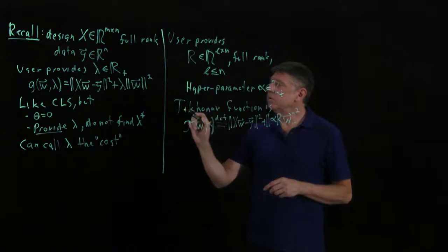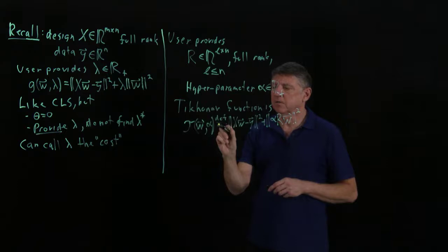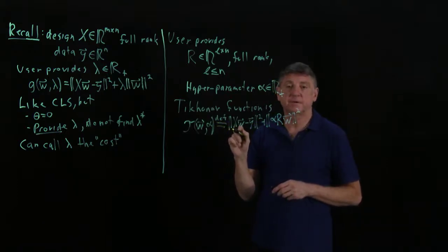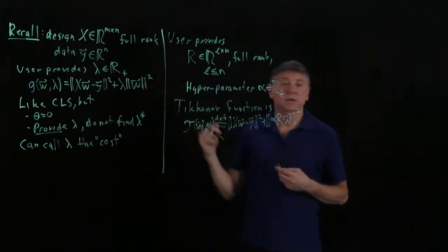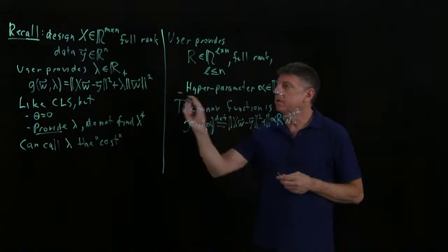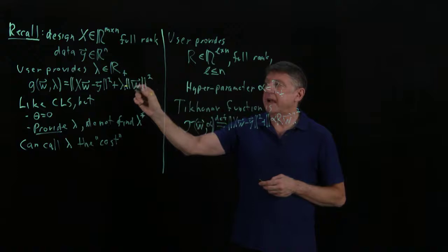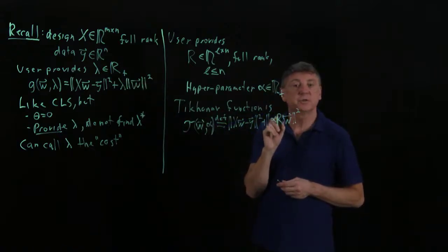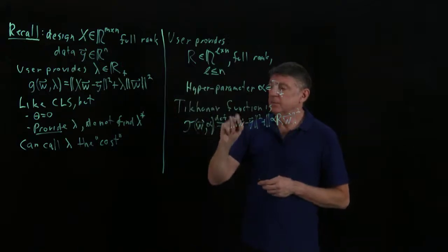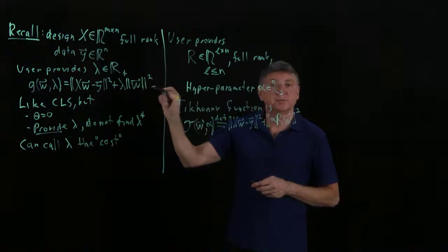You can now see the relationship between function g and the Tikhanov function. g is a simple form of the Tikhanov function, or you can think of Tikhanov as a generalization. For g, if you set lambda equal to alpha squared and the regularization matrix equal to the identity, then the Tikhanov function is g. So g is a special form.